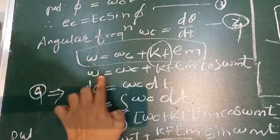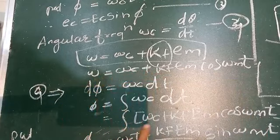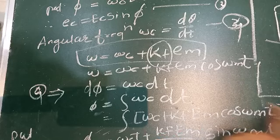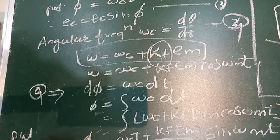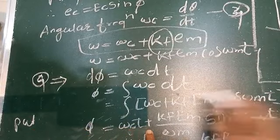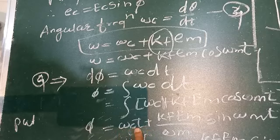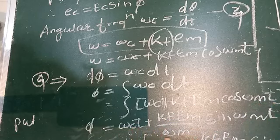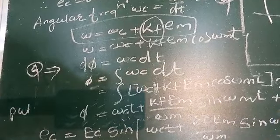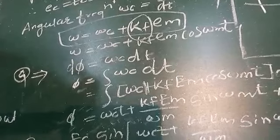Integrating both sides with respect to dt, we get: φ = ωc t + (kf · Em / ωm) sin(ωm t) + φ0, where φ0 is the constant of integration. This gives us the instantaneous phase of the frequency modulated wave.